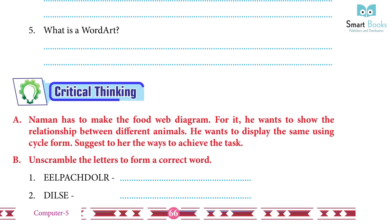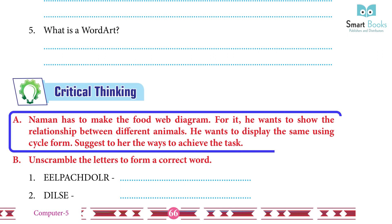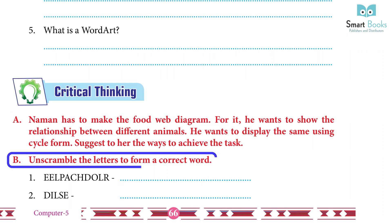Critical thinking: Naman has to make a food web diagram to show the relationship between different animals in cycle form. Suggest the ways to achieve this task. Answer: Students will do it themselves.